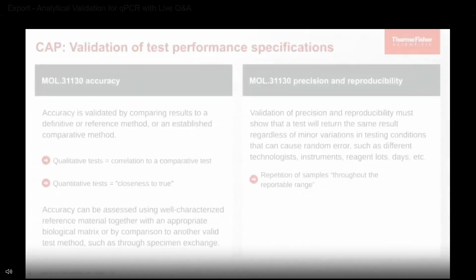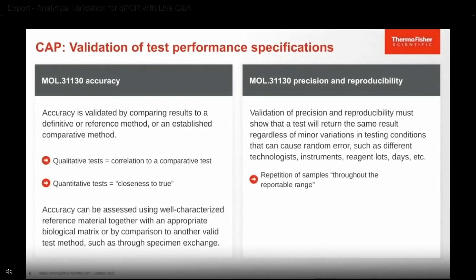Let's talk about CAP guidelines in detail. In terms of accuracy, it is validated by comparing results to a definitive or reference method or an established comparative method. For qualitative tests, we look at the correlation to a comparative test, whereas for quantitative tests we're looking for the closeness to the true results. Accuracy can be assessed using well-characterized samples in an appropriate biological matrix or by comparison to another valid test method, such as a specimen exchange.